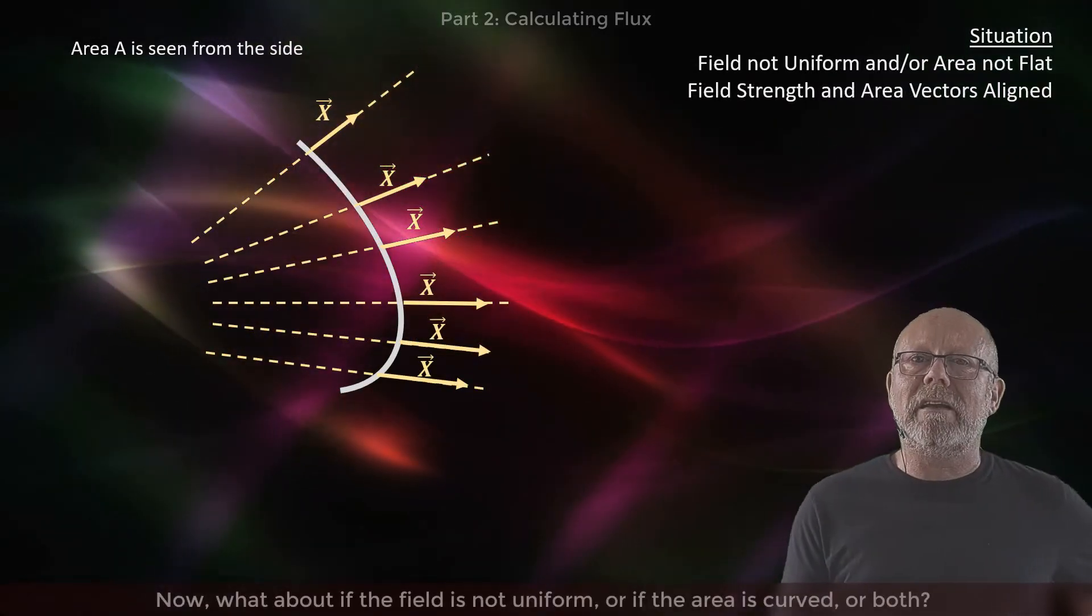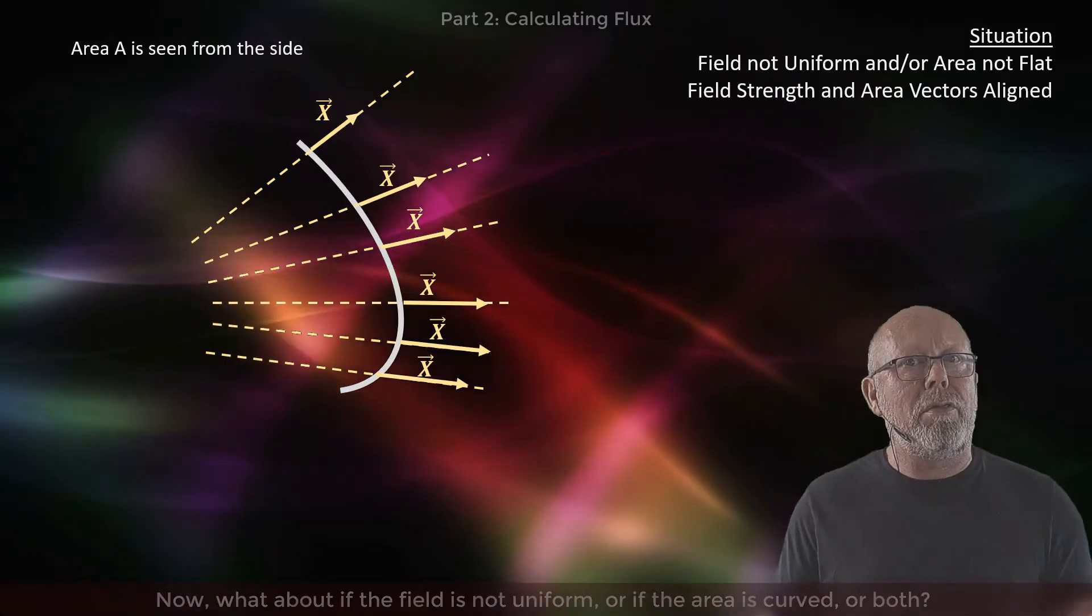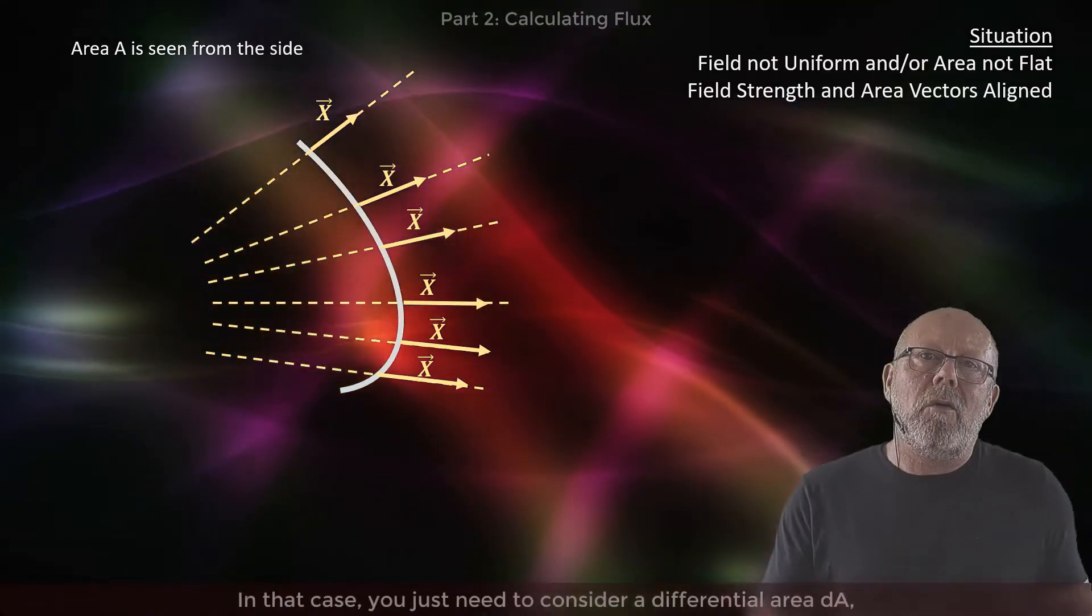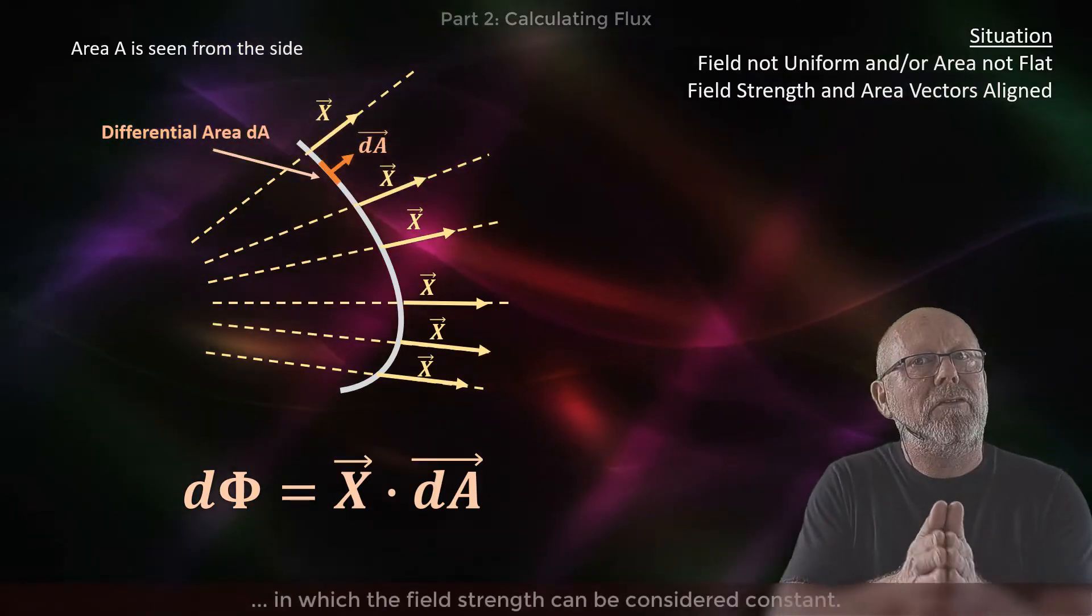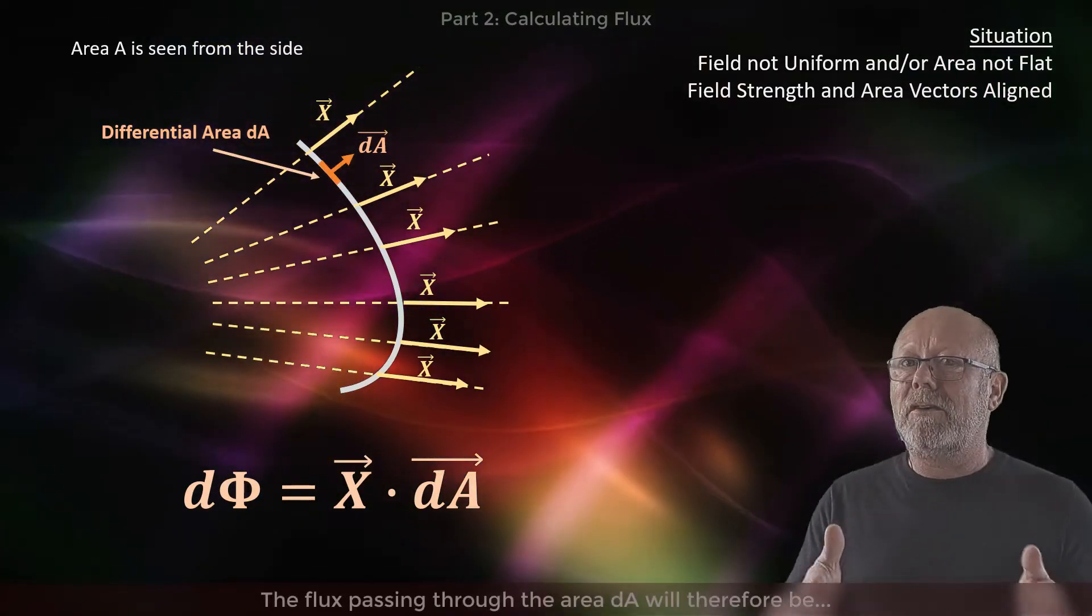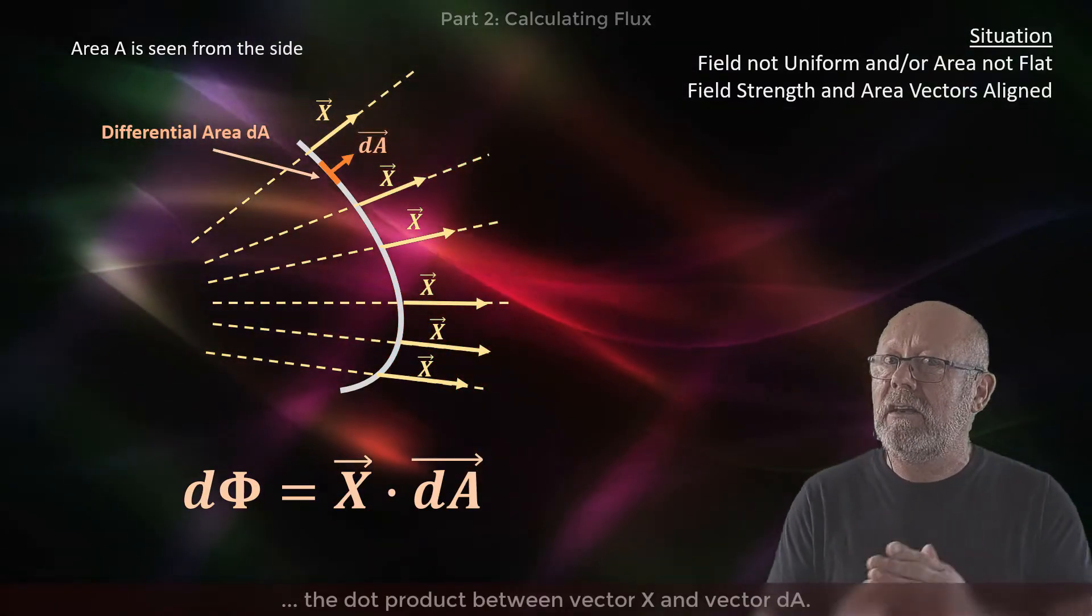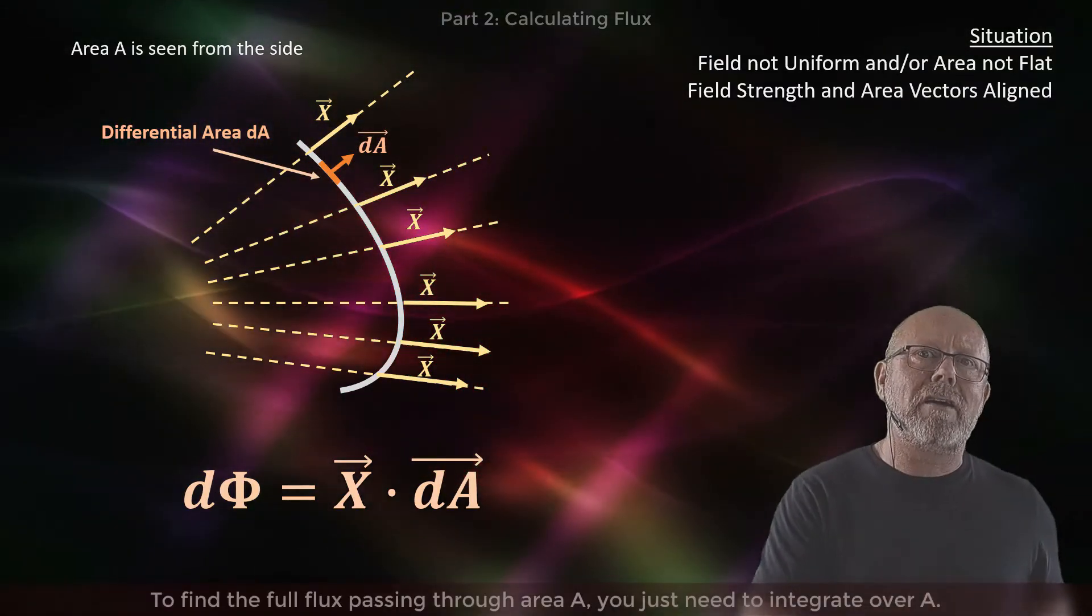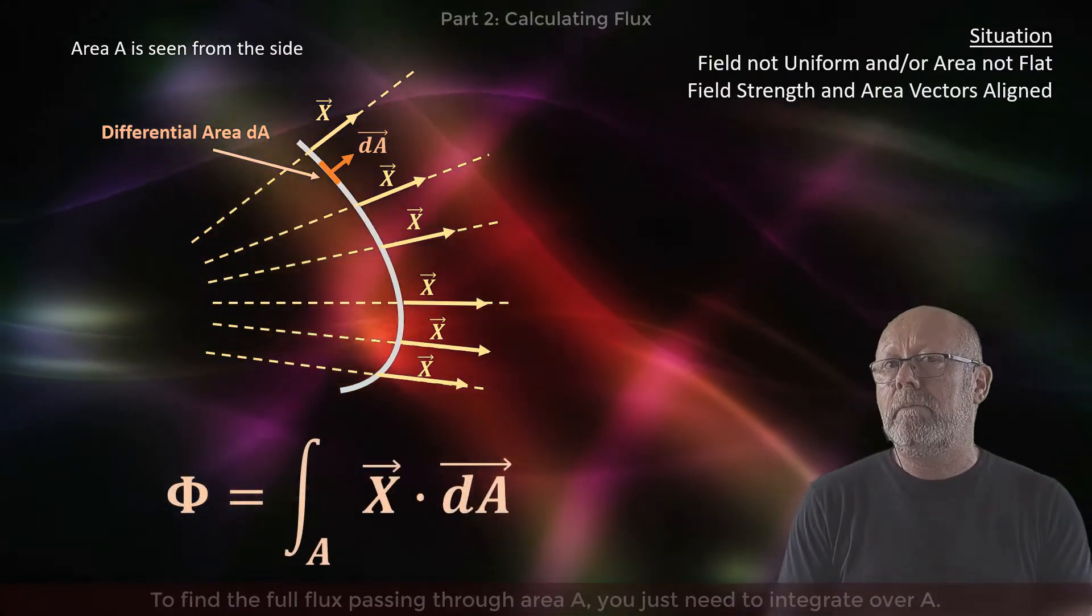Now what about if the field is not uniform, or if the area is curved, or both? In that case, you just need to consider a differential area dA in which the field can be considered constant. The flux passing through dA will therefore be the dot product between vector χ and vector dA. To find the full flux passing through the area A, you just need to integrate over A.